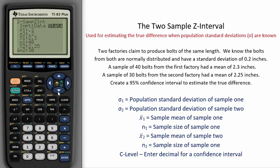A sample of 40 bolts from factory 1 had a mean of 2.3 inches. 2.3 is the sample mean from factory 1 and 40 is the sample size from factory 1.